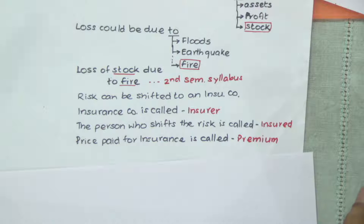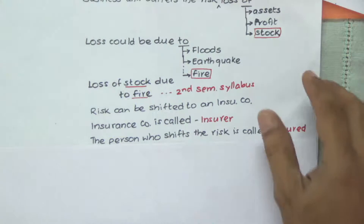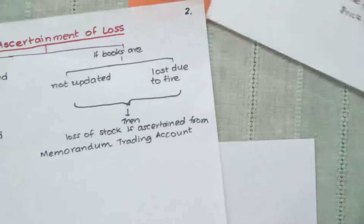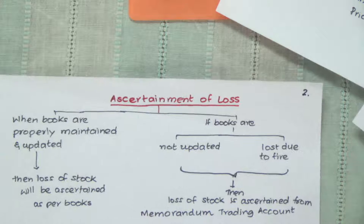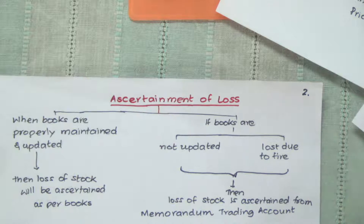It keeps going on till there is some fire in the premises of the insured and there is loss of stock. When there is loss of stock, the next thing the insured person is going to do is claim this loss from the insurance company. So now we are concerned with how do we ascertain the amount of loss which can be claimed from the insurance company.